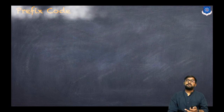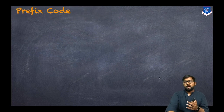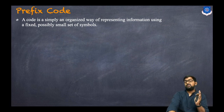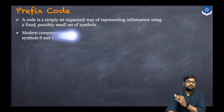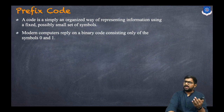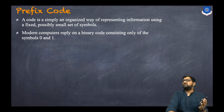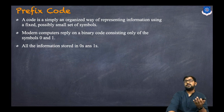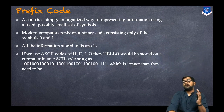First let us discuss what is a prefix code. A code is simply an organized way of representing information using a fixed, possibly small set of symbols. Modern computers rely on a binary code consisting only of two symbols — zero and one. All the information today is stored in either zeros or ones.